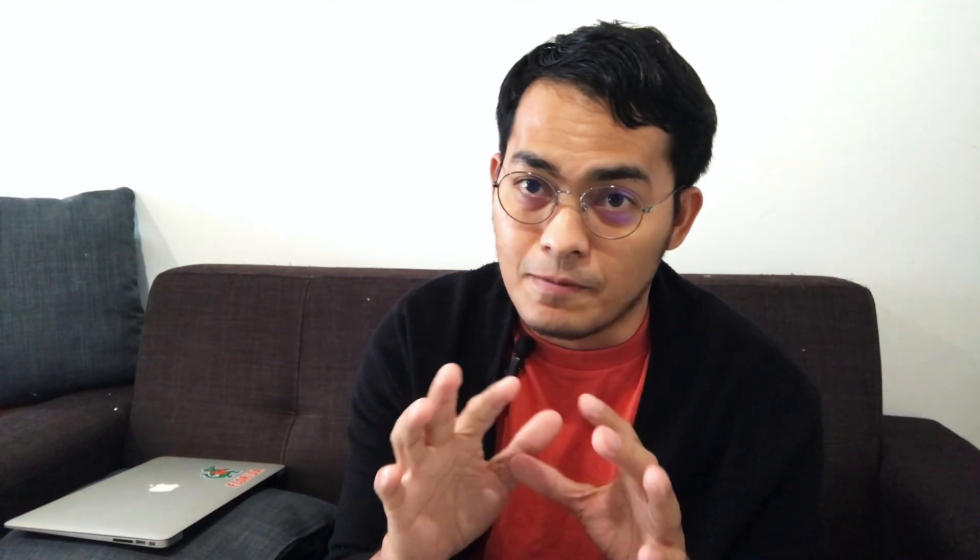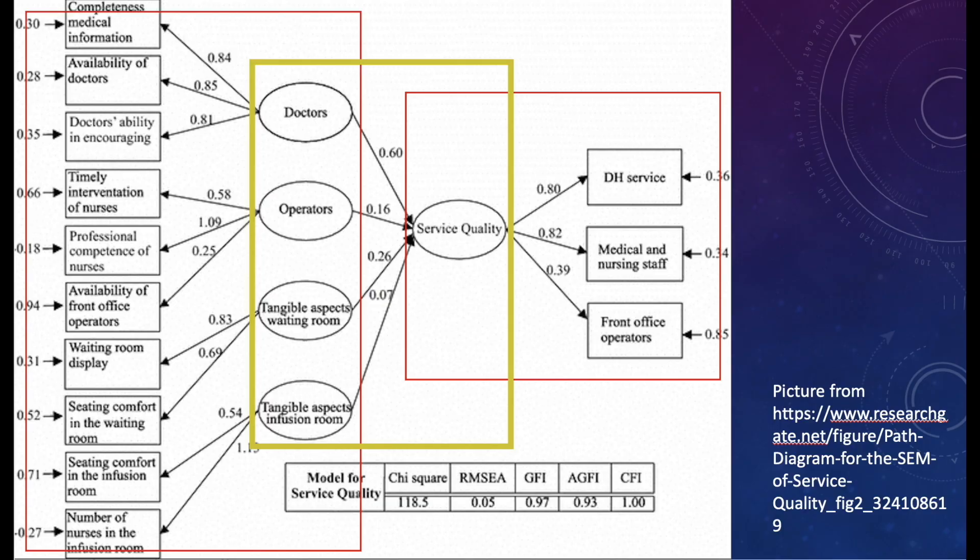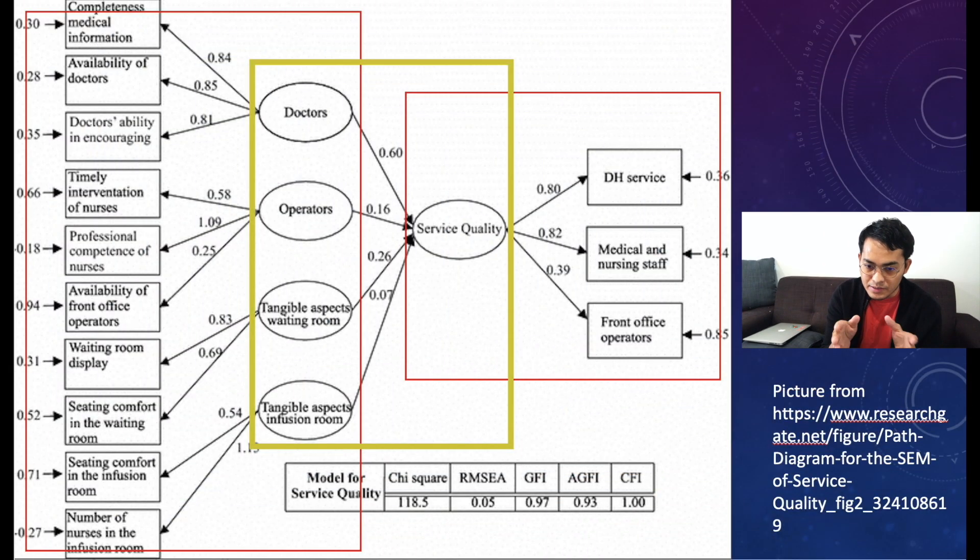The last one here is a full image of the SEM. There are three squares that I prepared. The first square, you can see from the independent variables: doctors, operators, tangible aspects waiting room, tangible aspects efficient room - these are independent variables, latent variables. And then on the left, like completeness, medical information available of doctors, availability - these are the measured variables of doctors, the indicators of doctors and another one's indicators of operators.